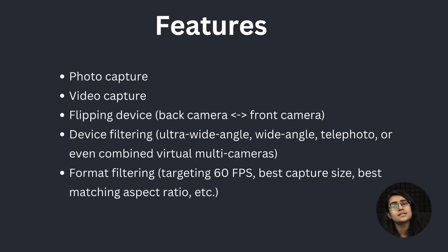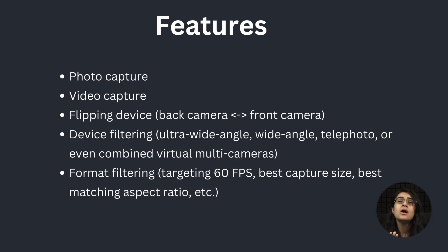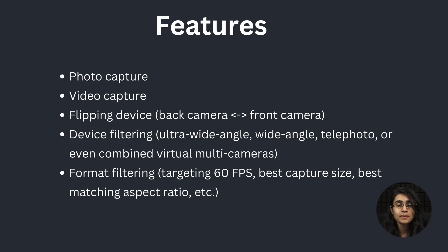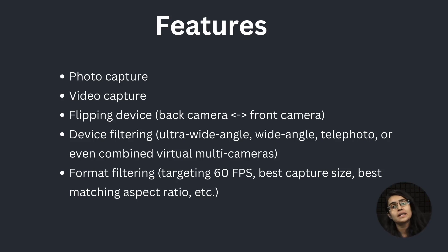In device filtering, you can see there are many lenses available — for example, ultra-wide-angle, wide-angle, telephoto lens, and even a combined virtual multi-camera. This device filtering option was not available in the previous React Native Camera. There is also format filtering, which targets FPS — like 30 FPS, 60 FPS, and for slow motion video up to 240 FPS. It even provides the best capture size, best matching aspect ratio, and more.